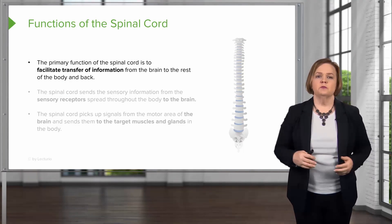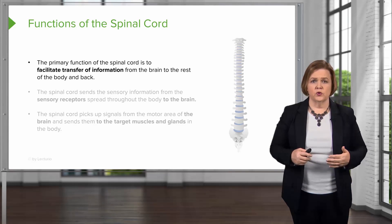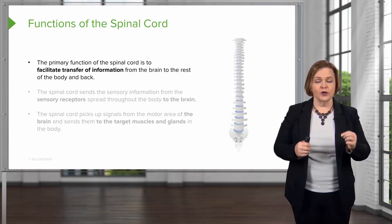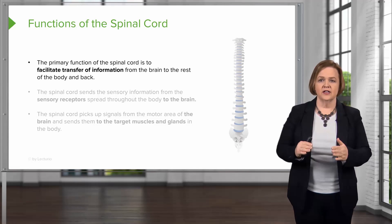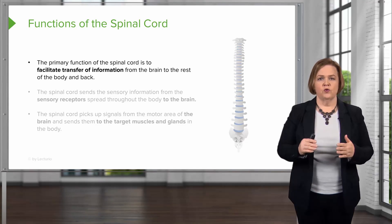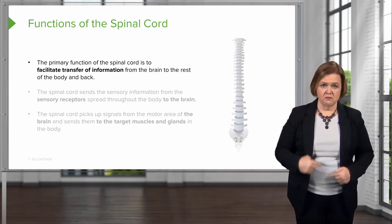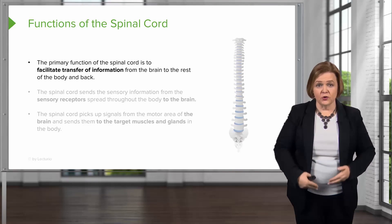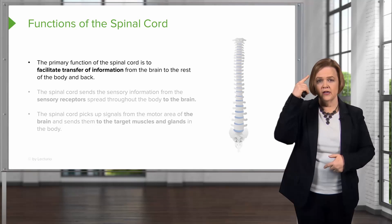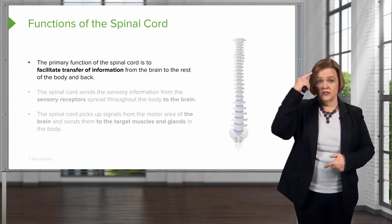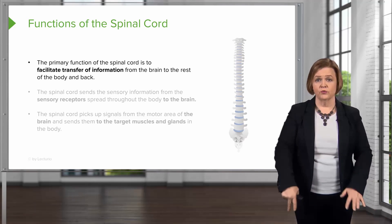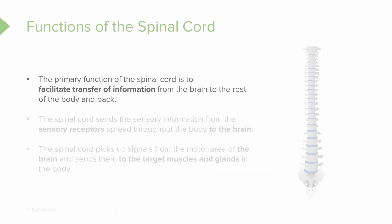The primary function of the spinal cord is to facilitate transfer of information. Think about the spinal cord as an information highway. Information goes up from the rest of your body up to your brain, then your brain decides what you need to do and sends signals back down to the rest of the body. The primary function of the spinal cord is just the highway for information to go from the brain to the rest of the body and back.